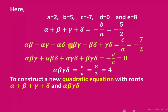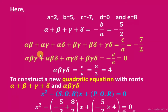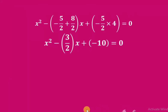Using the quadratic equation general form: x² - (sum of roots)·x + (product of roots) = 0. The sum of roots is alpha + beta + gamma + delta = -5/2, and the product of roots is alpha·beta·gamma·delta = 4. So the equation becomes x² - (-5/2)x + (4) = 0, which simplifies to x² + (5/2)x - 20/2 + ... giving numerator terms: x² - (-5/2)x + 4 = 0.